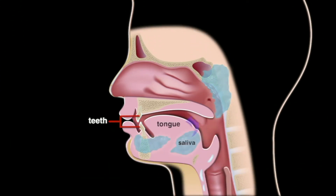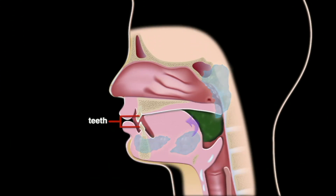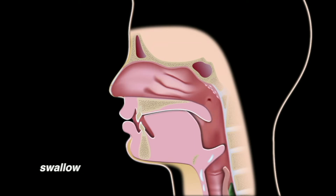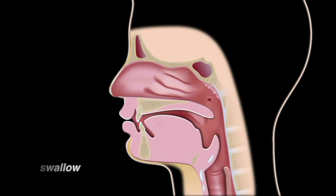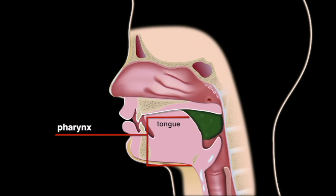Once the teeth, tongue, and saliva have created the bolus, it is ready to be swallowed. Swallowing is a complex process, combining voluntary and involuntary responses. The first step is for the tongue to voluntarily press the bolus backward into the pharynx. When the bolus reaches the pharynx, it initiates several reflex involuntary responses.